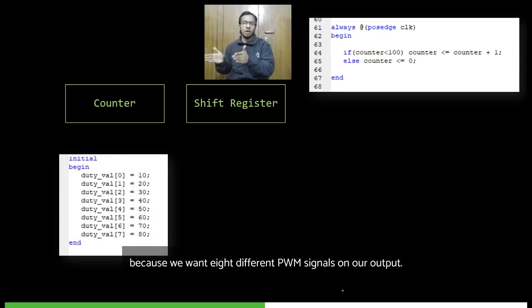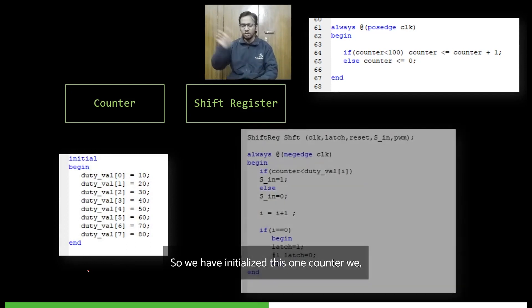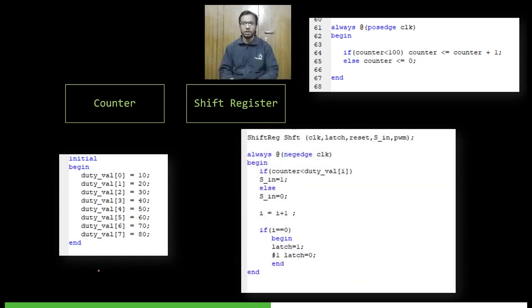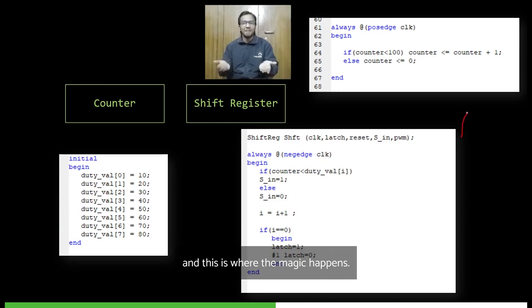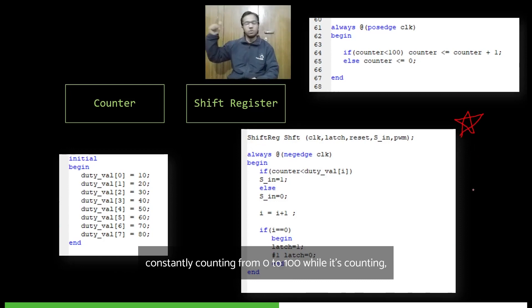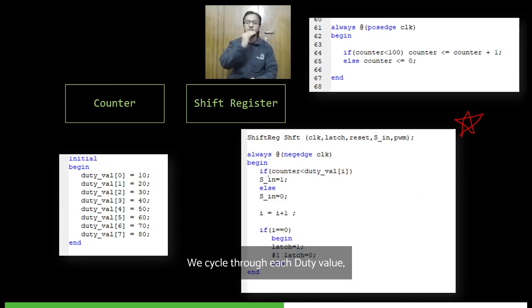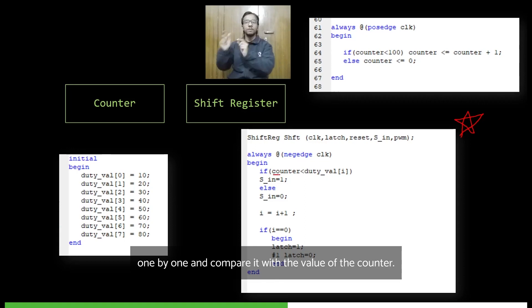So we have initialized this one counter, we have eight different duty cycle values. Now comes the most important part: the integration. And this is where the magic happens. So what we do is, we know that this counter is continuously counting from zero to 100. While it's counting, we cycle through each duty value one by one and compare it with the value of the counter. If the value of the counter is less than the duty cycle value, then we want to send a data output of one. We send it using the serial-in input of the shift register.